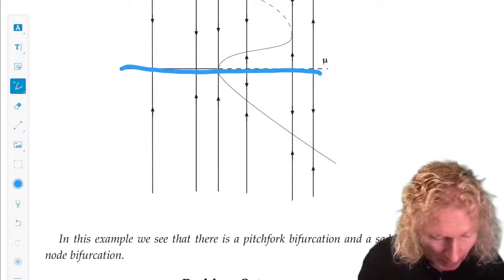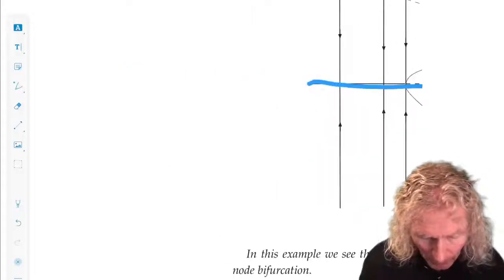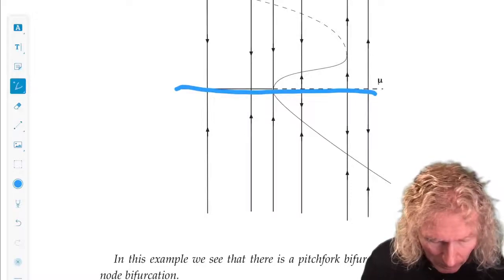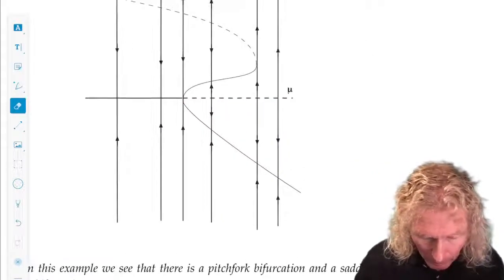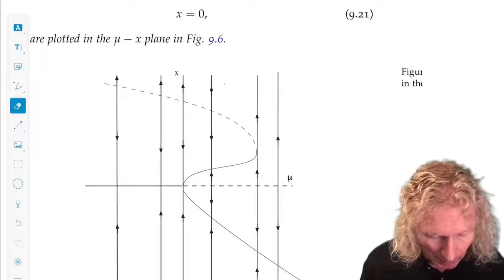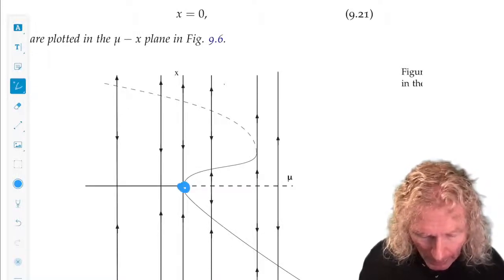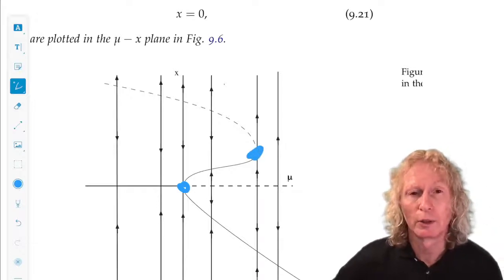Now what you have in this particular example is a pitchfork bifurcation point and a saddle node bifurcation point.